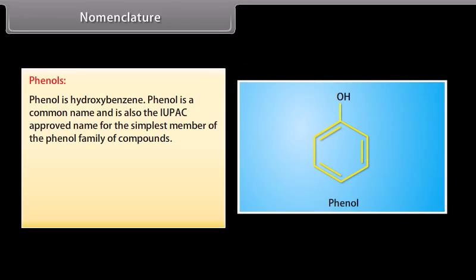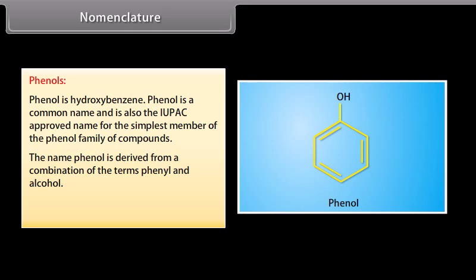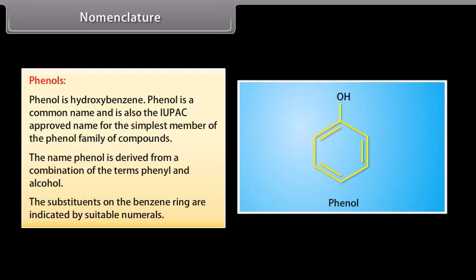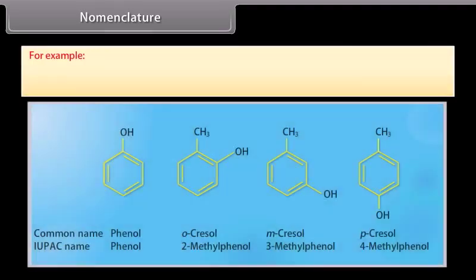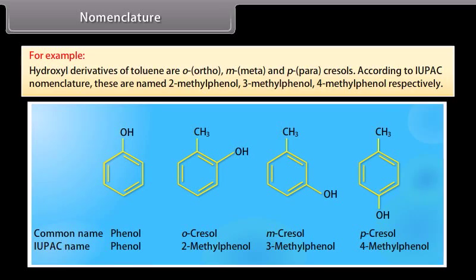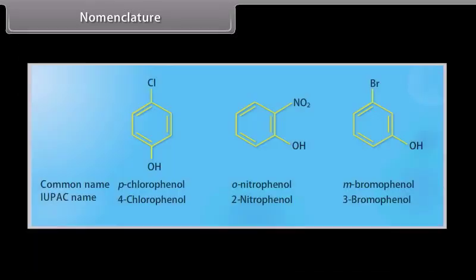Phenol is hydroxybenzene. Phenol is a common name and is also the IUPAC approved name for the simplest member of the phenol family. The name phenol is derived from a combination of the terms phenyl and alcohol. Substituents on the benzene ring are indicated by suitable numbers. For example, hydroxyl derivatives of toluene are ortho, meta and para-cresols. According to IUPAC nomenclature, these are named 2-methylphenol, 3-methylphenol and 4-methylphenol respectively.